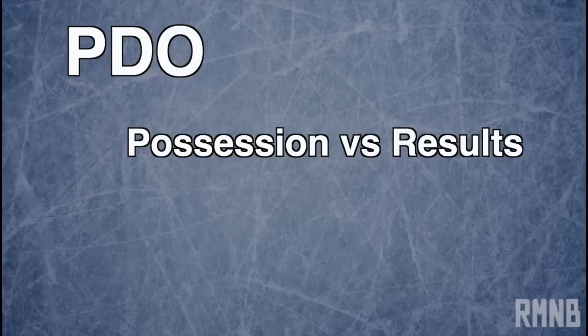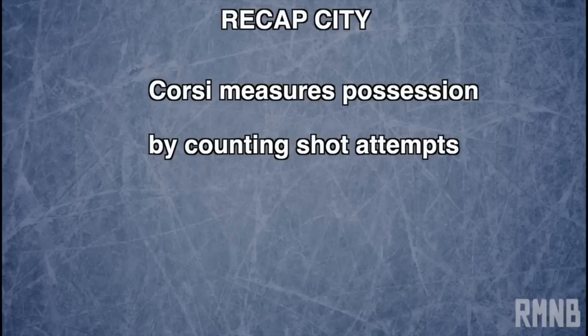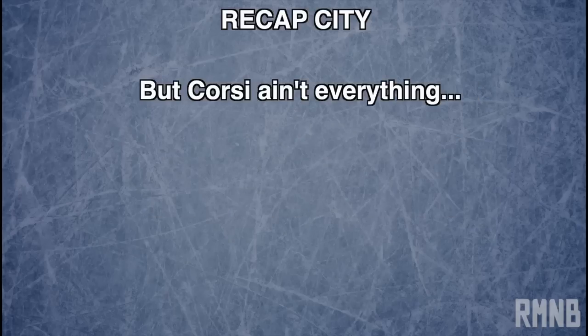And because PDO isn't something that players can generally control, stats like plus-minus aren't really telling us what we thought they were. So a quick summary: when we're talking about Corsi and Fenwick, we're really just talking about puck possession, which we measure in shot attempts. A Corsi above 50% just means a player or a team is outshooting its opponents. Of course, there's a whole bunch of assumptions baked into Corsi numbers, and exploring those assumptions is a huge part of analysis.